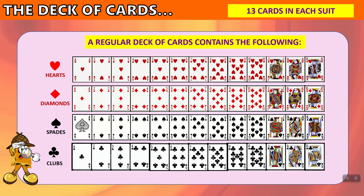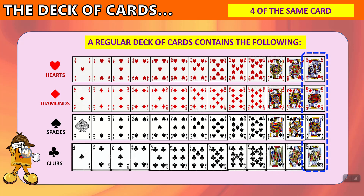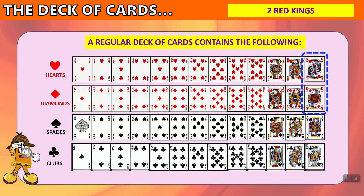Sometimes the ace is known as a 1. There are 4 of the same card in the deck — for example, here are the 4 aces. Here are 4 fives: the 5 of hearts, 5 of diamonds, 5 of spades, 5 of clubs. There are 4 jacks and 4 kings. Looking at red kings, we can see the king of hearts and the king of diamonds — there are 2 red kings. The 2 black jacks are the jack of spades and jack of clubs.